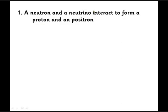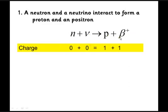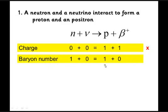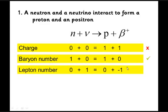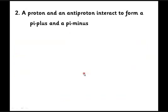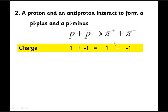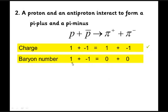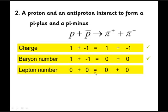Next example: a neutron and a neutrino produce a proton and a positron. Charge: zero plus zero equals plus one plus one — that doesn't work. Baryon number: one plus zero equals one plus zero — fine. Lepton number: zero plus one equals zero plus minus one — also fails. If an electron were made instead of a positron, lepton number would become plus one on both sides and it would work. Another example: a proton and antiproton produce a pi plus and pi minus. Charge, baryon number, and lepton number all balance — this interaction is possible.